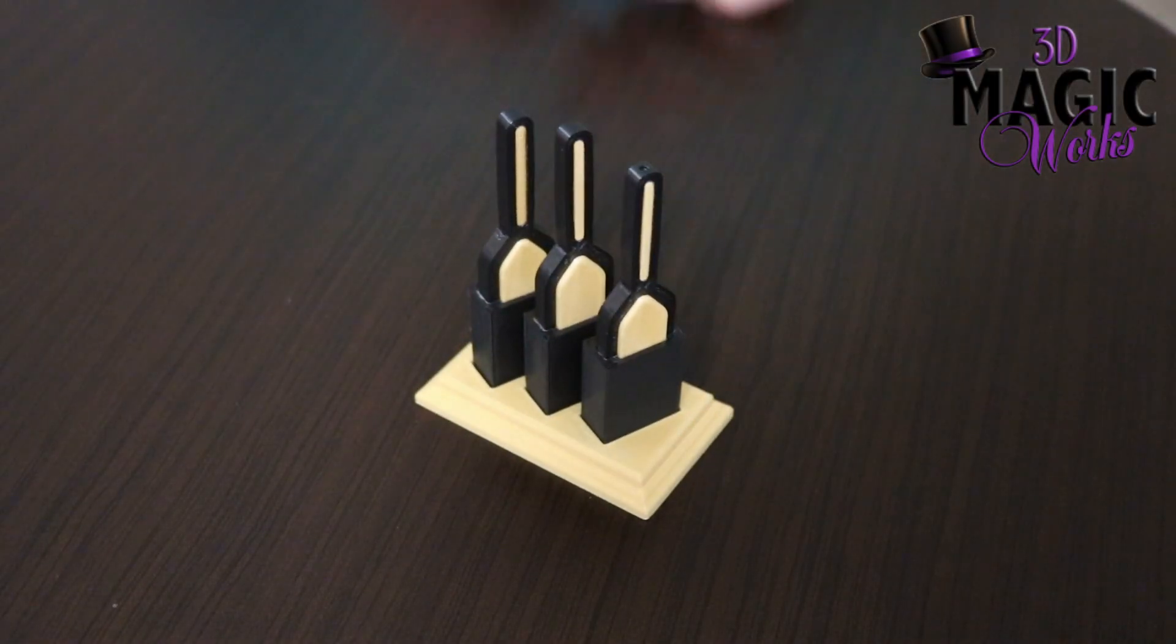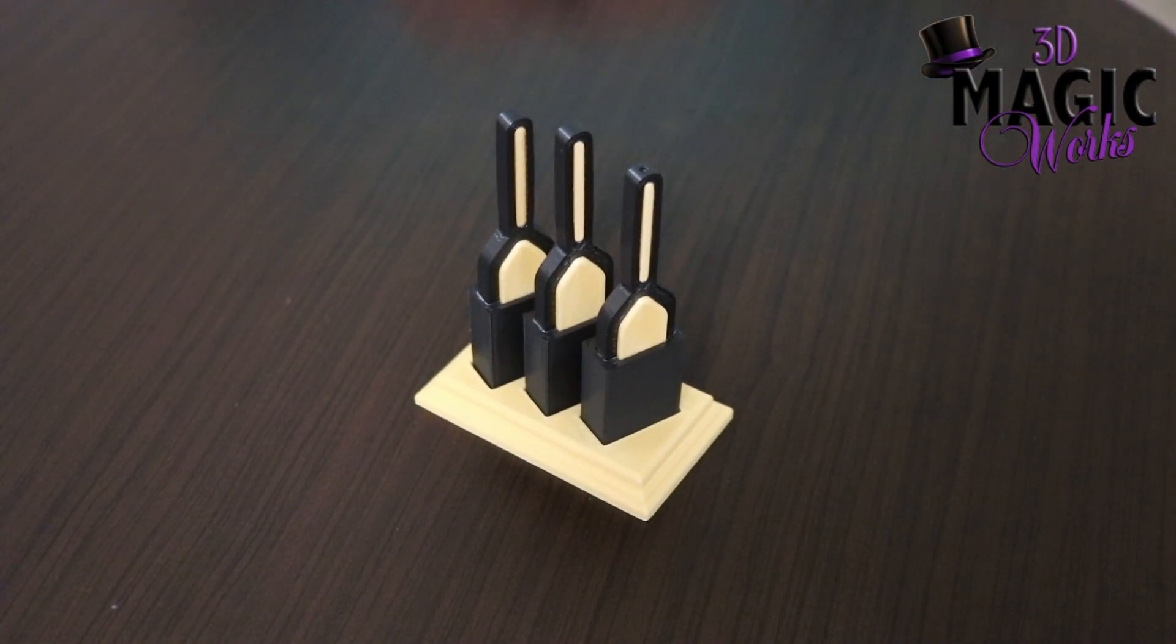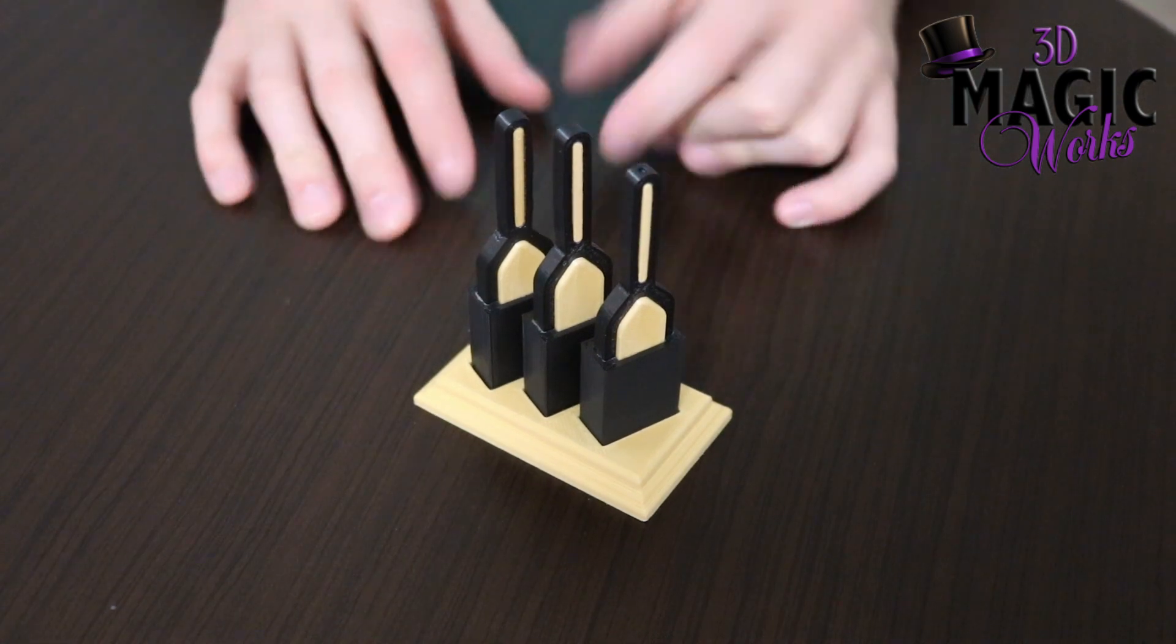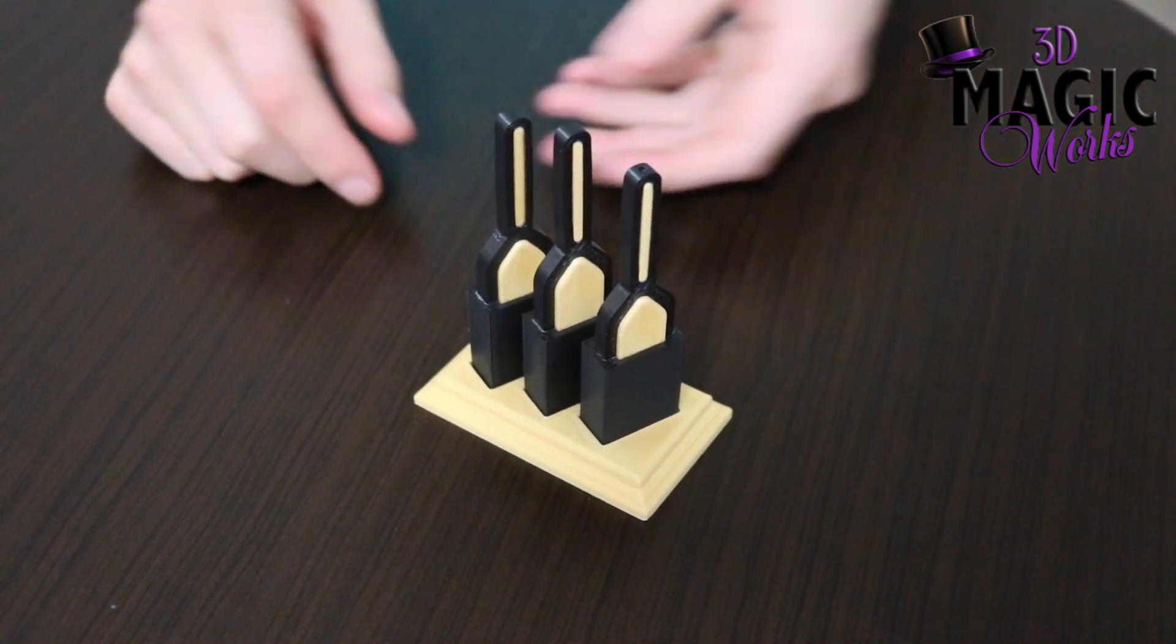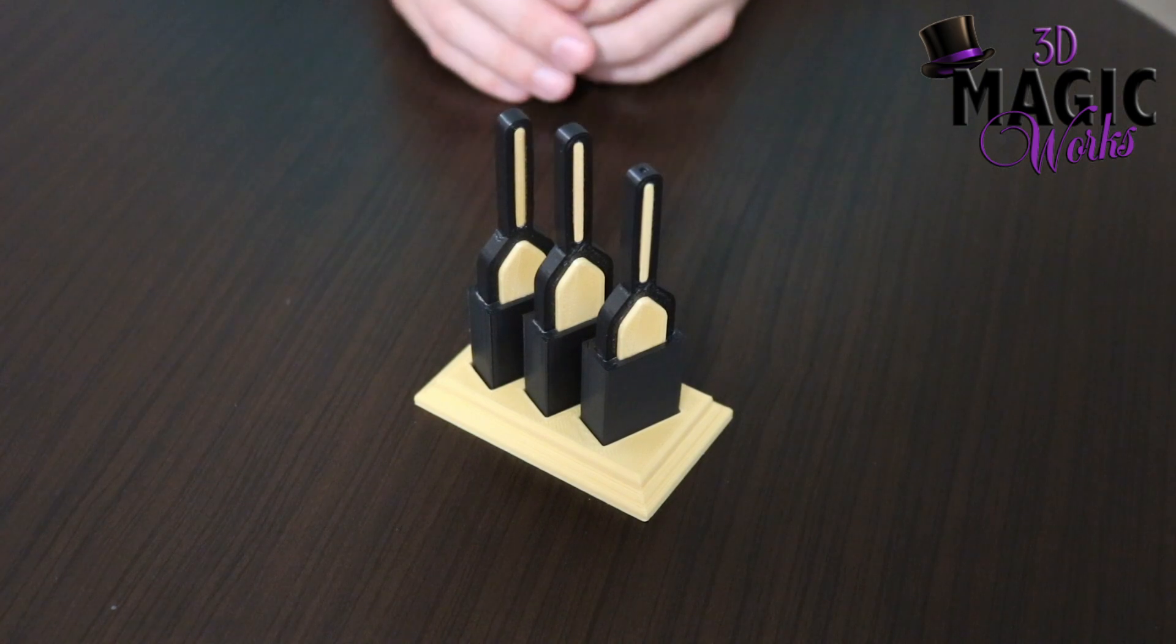Hello everyone, this is Paddle Monty from 3DMagicWorks.com. I'm sure you're familiar with the game they play in New York where they have three little shells and a pea. They put the pea under the shell and mix it up, and you have to find which shell has the pea.